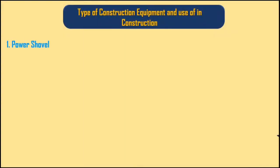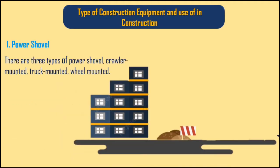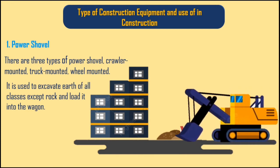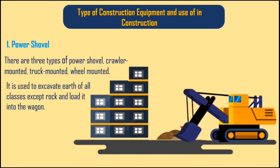1. Power Shovel. There are three types of power shovel: crawler mounted, truck mounted, and wheel mounted. It is used to excavate earth of all classes except rock and load it into the wagon.